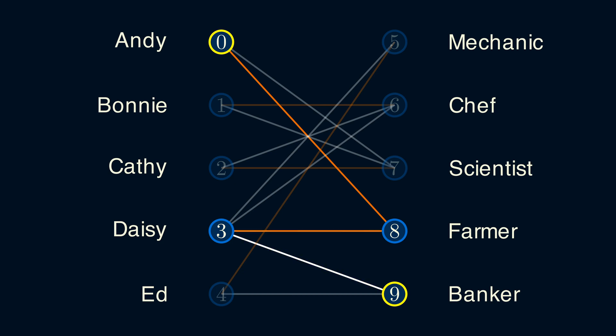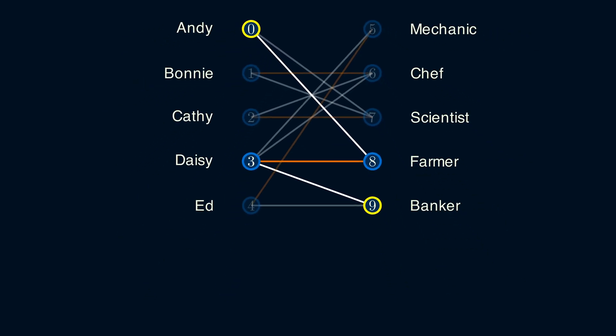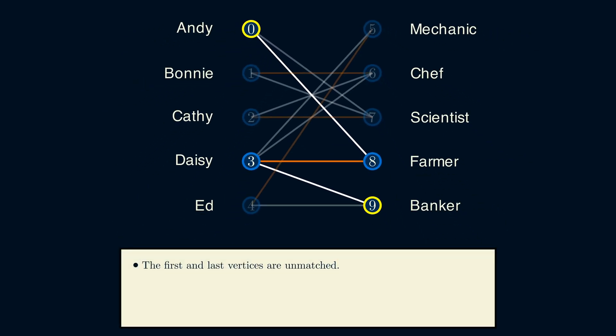What's special about this path is two things. The first and last vertices are unmatched. And along the path, the edges alternate between not being in the matching and being in the matching. This is called an augmenting path.